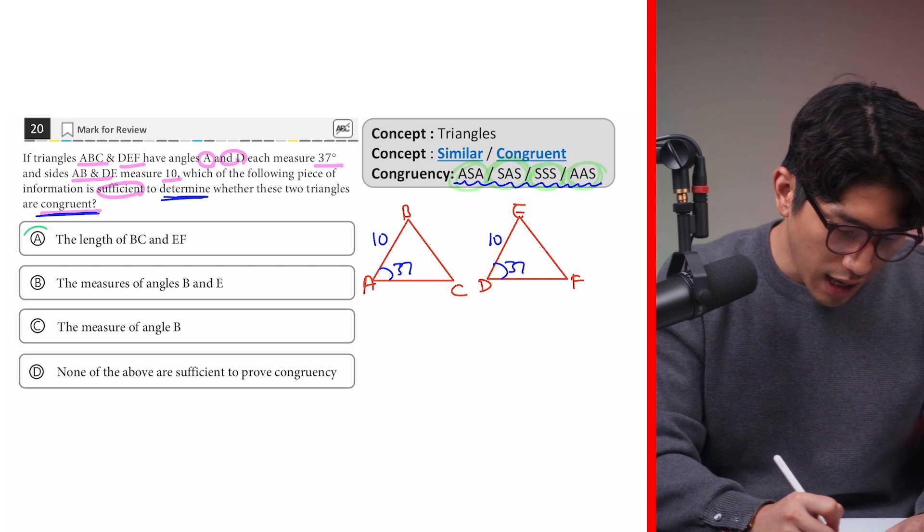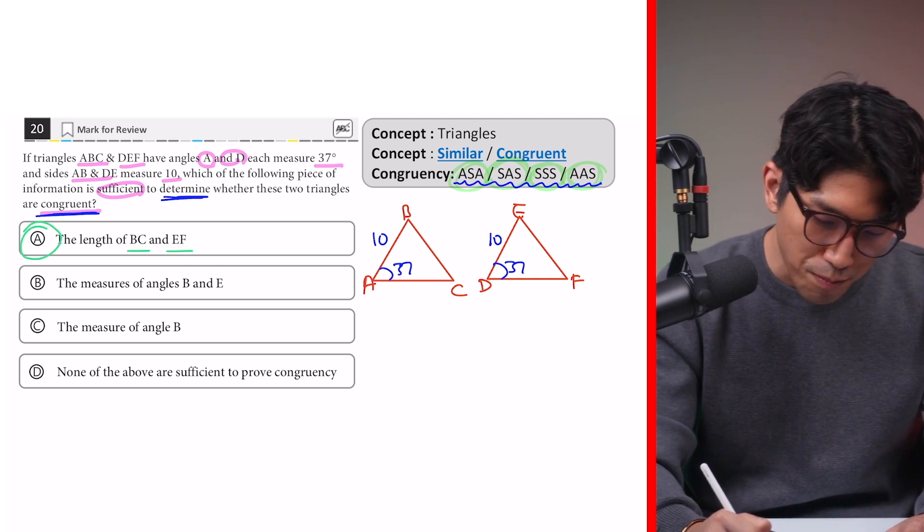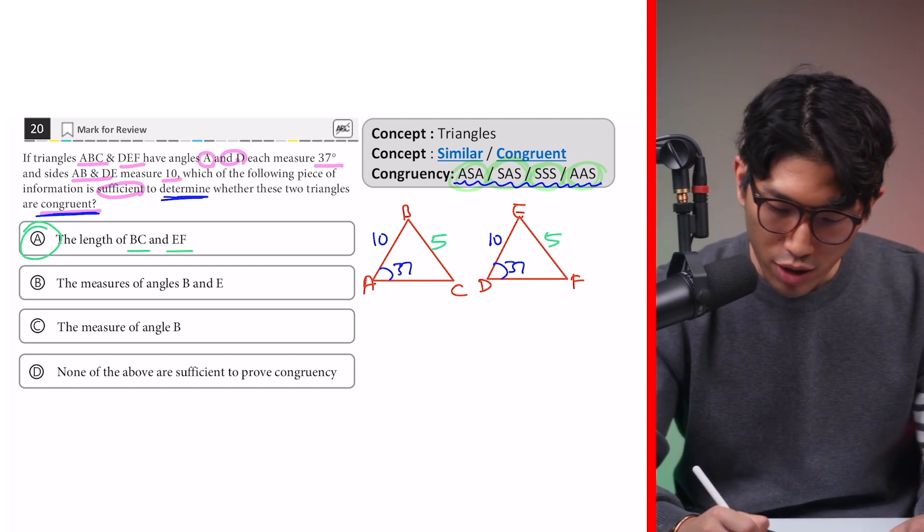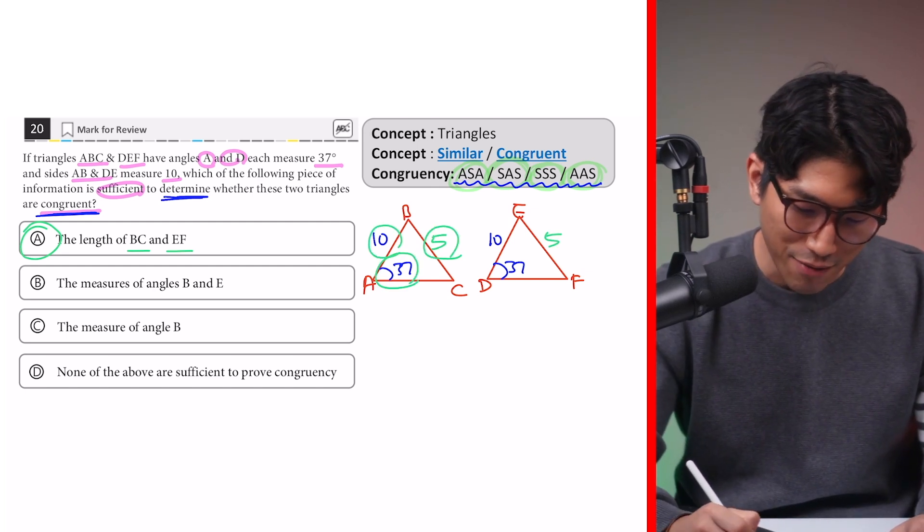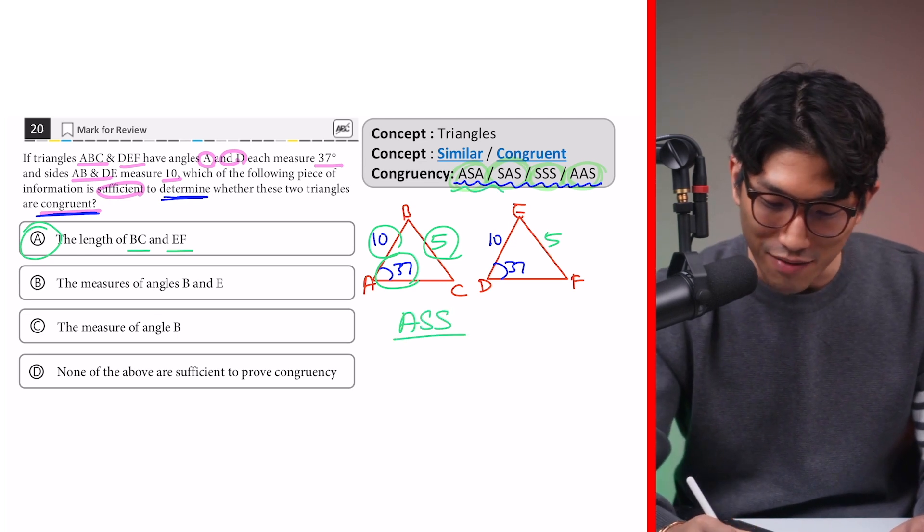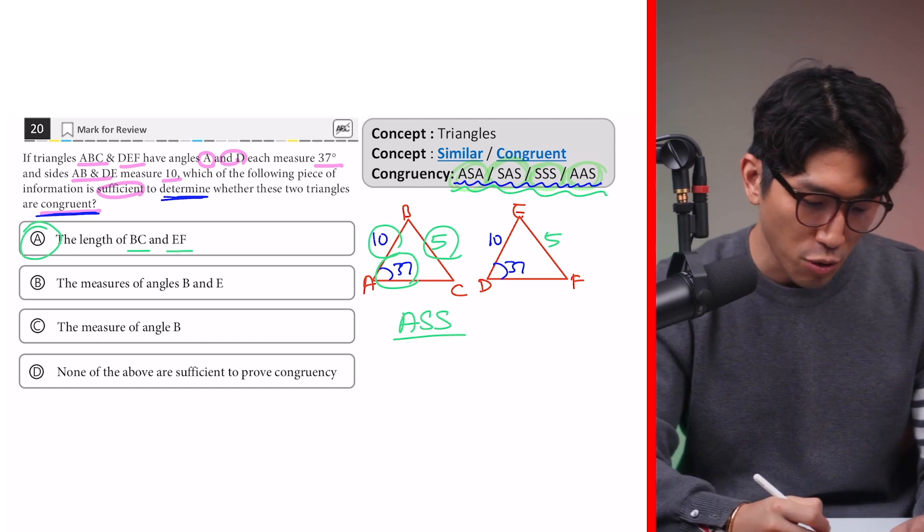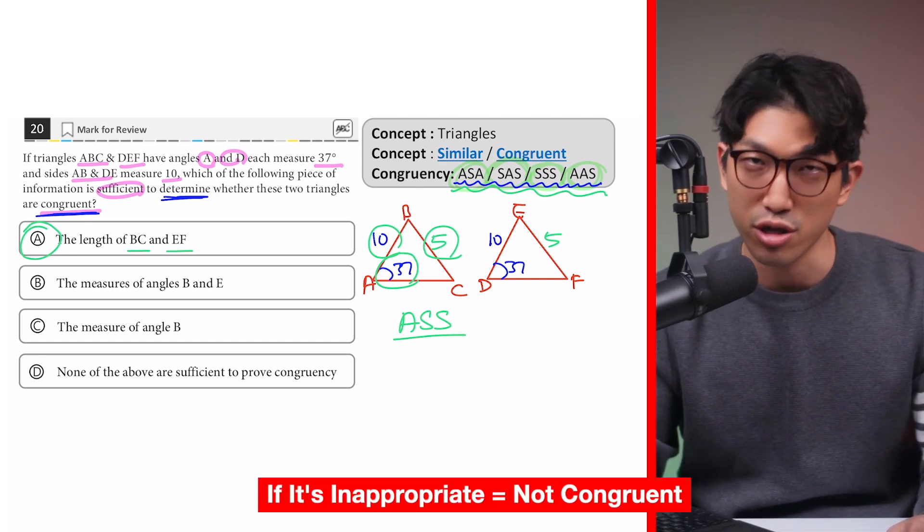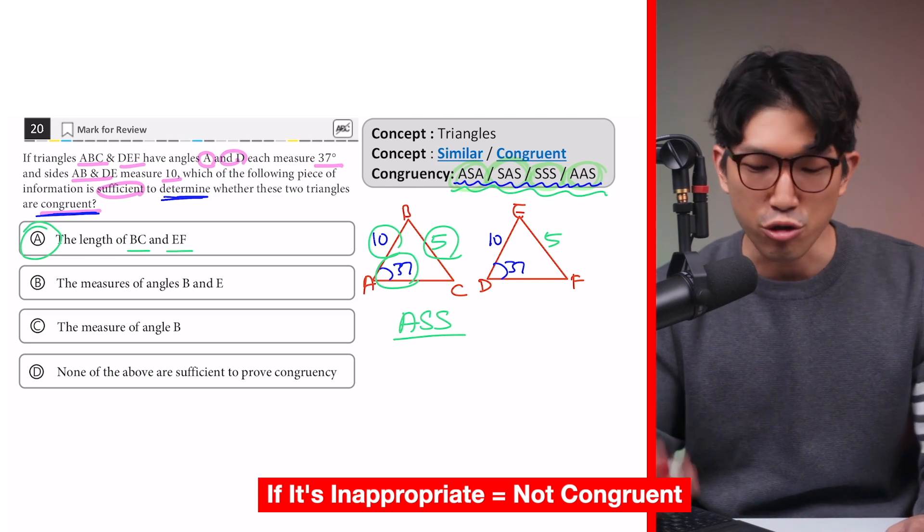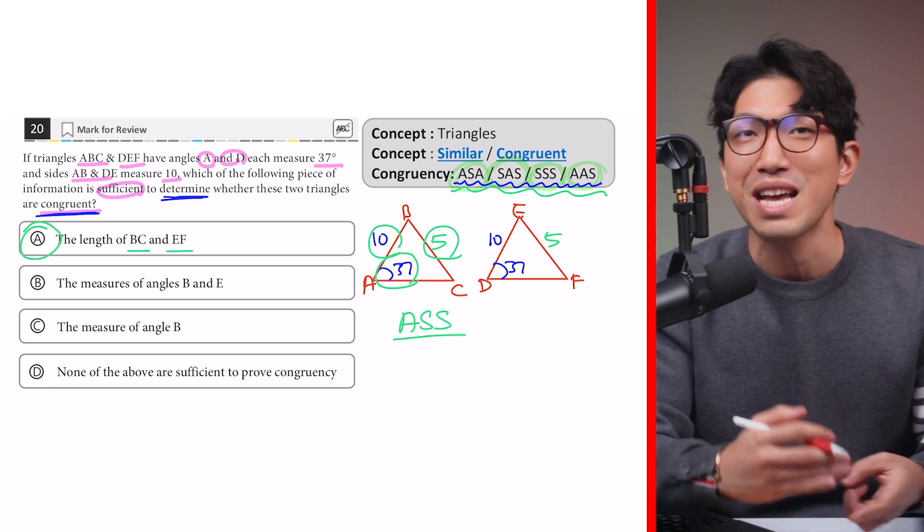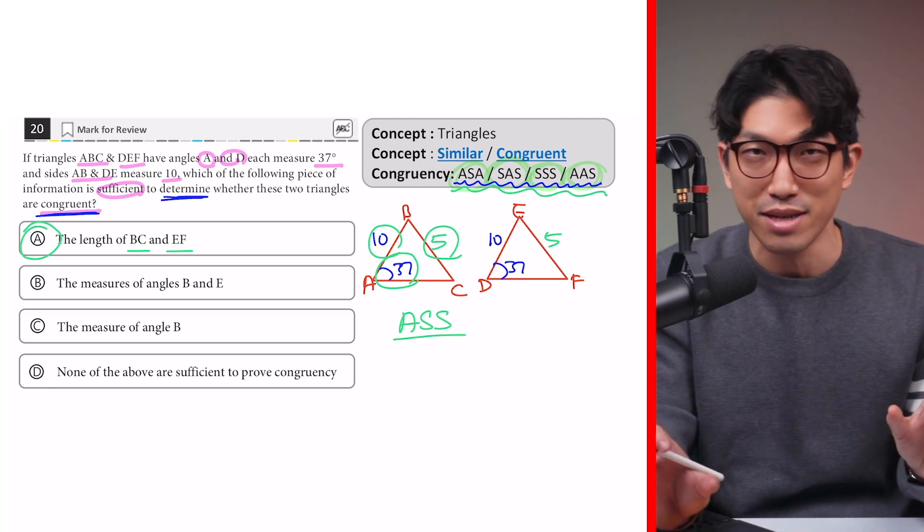Let's check choice A over here, length of BC and EF. So if we know BC and EF, so let's say this is like 5 and 5. Well, right now, we know angle, side, and side, right? So we know angle, side, and side, and we know this is not any of these four conditions right here. So our choice A is not going to work. It's not sufficient to prove that these two triangles are congruent. And congruent just means these two triangles are essentially identical. They're the same triangles with same angles and same side length. It's like copy and paste.